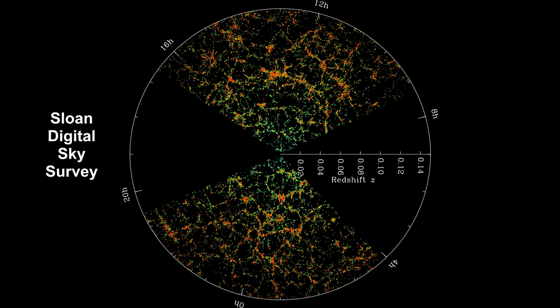Earth is at the center, and each point represents a galaxy. Galaxies are colored according to the age of their stars, with the redder, more strongly clustered points showing galaxies made of older stars. The outer circle is at a distance of 2 billion light-years. The region between the wedges was not mapped by the survey, because dust in our own galaxy obscures the view of the distant universe in these directions.